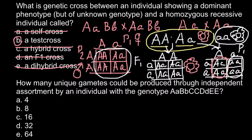Now we can move to the second question: How many unique gametes could be produced through independent assortment by an individual with the genotype capital A small a, capital B small b, homozygous dominant for C, heterozygous for D, and homozygous dominant for allele E?